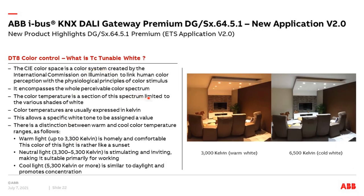Tunable white means controlling warm and cold white light. In a typical residential living room, you might have cold white at around 6500 Kelvin in the afternoon, then change to 3000 Kelvin warm white in the evening while watching television. Between 3000 and 5000 Kelvin is neutral light. This is what we can achieve with tunable white color temperature control.